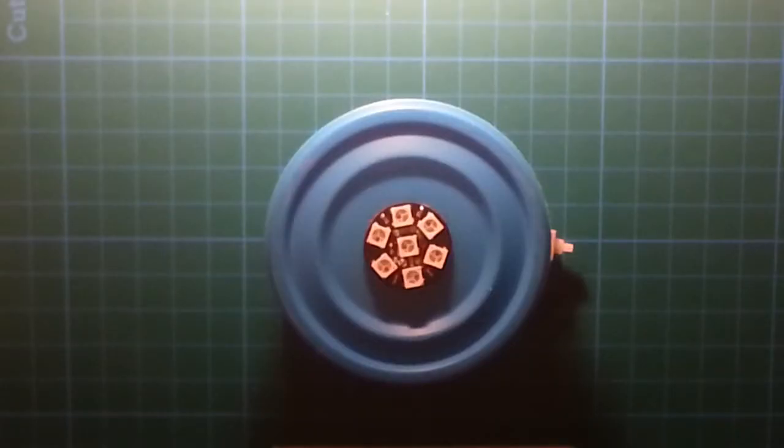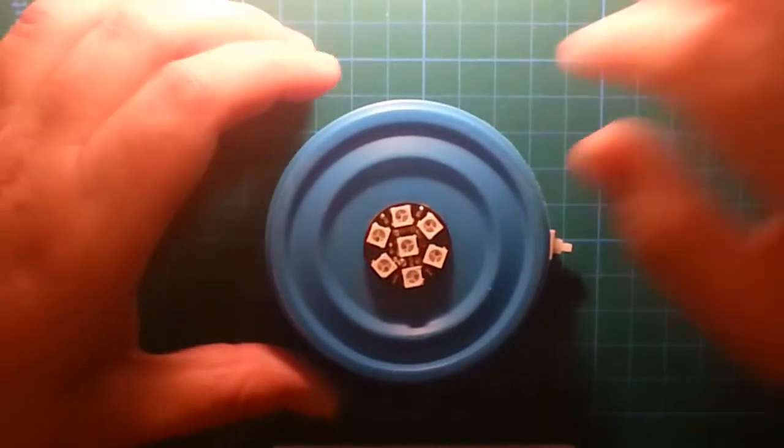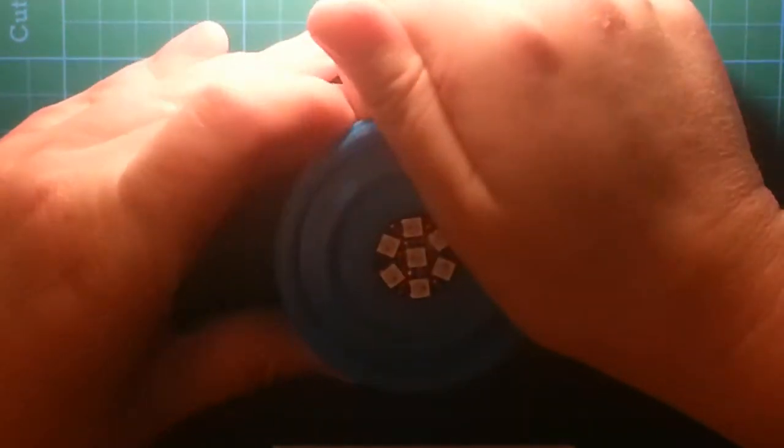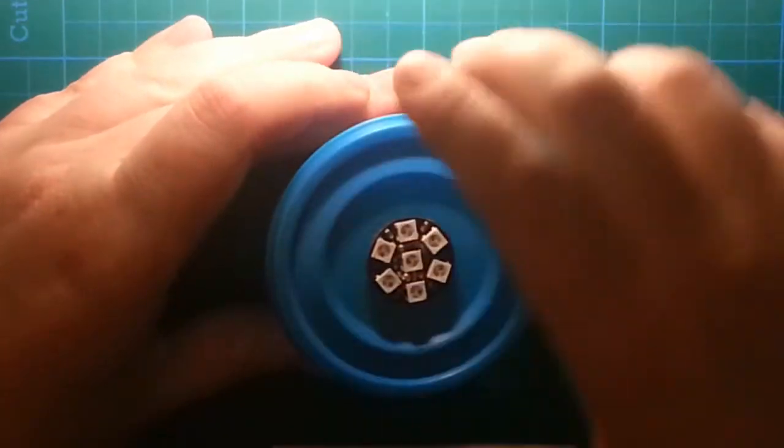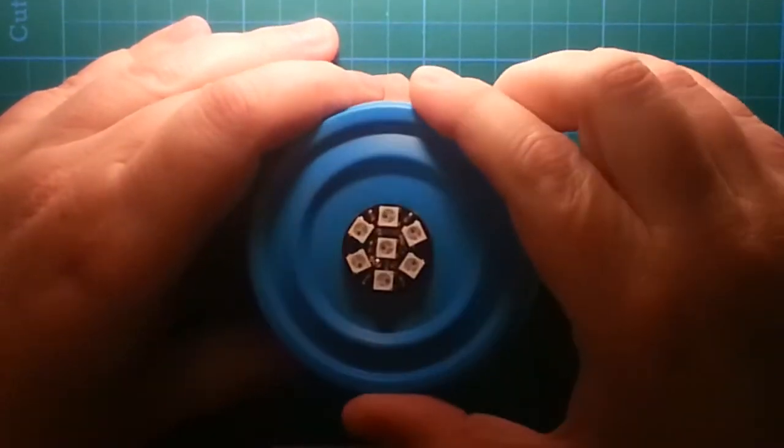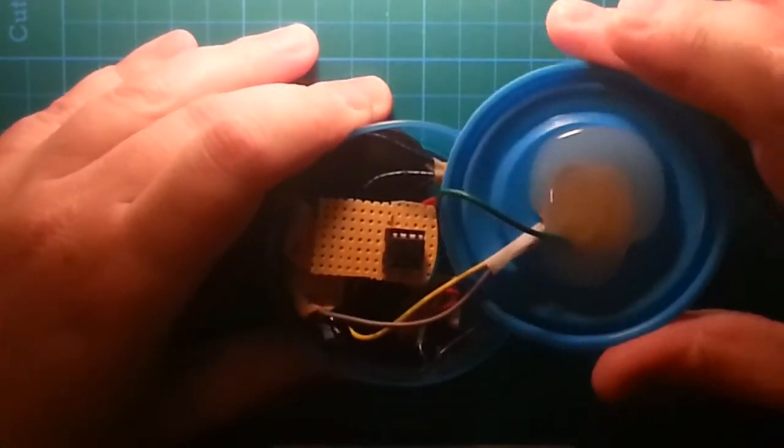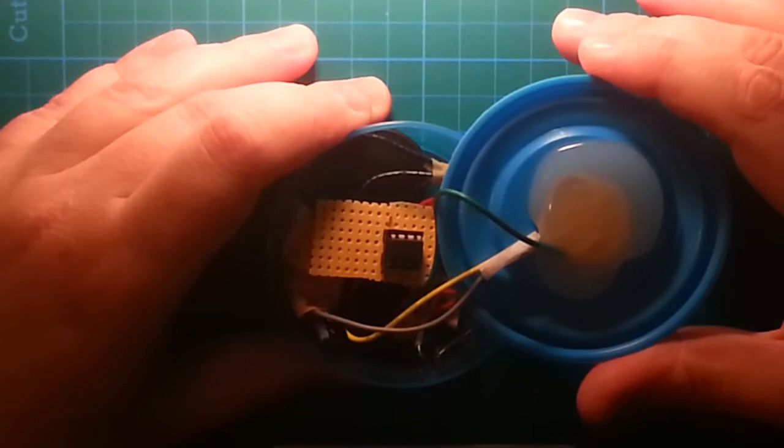Ok, now it's time to show you how it all works. I'm gonna remove the lid. Ok, well here is a NeoPixel ring as you can see. And on the bottom I used hot glue to fix it in place.